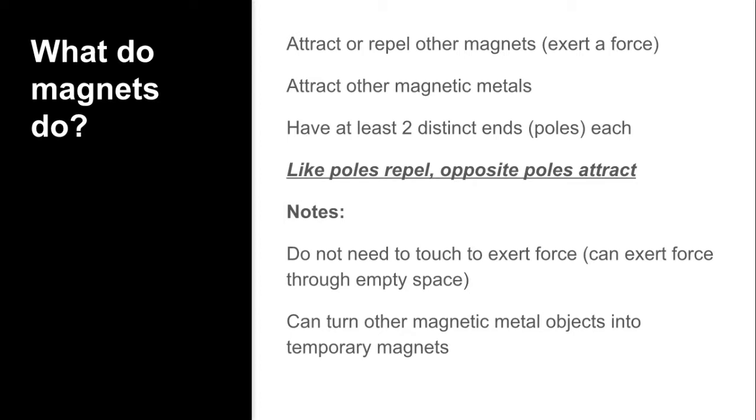And all magnets have at least two distinct ends or poles, the north pole and the south pole. As we mentioned, like poles repel each other, opposite poles attract. If it helps, we usually call the north pole a positive end or the south pole a negative end, so like most things in science, two positives like to go away from each other but a positive and negative like to come together.